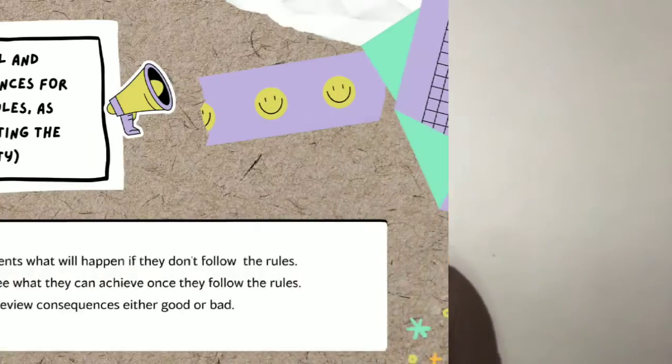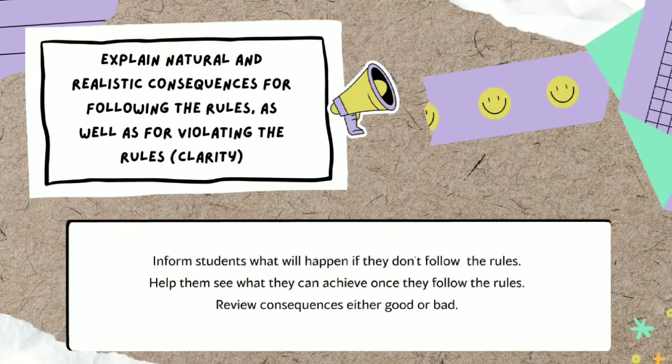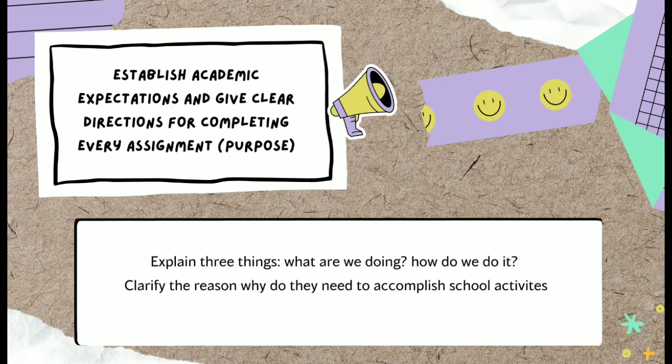Second is clarity. Teachers should explain natural and realistic consequences for following the rules as well as for violating them. Setting proper expectations and clear boundaries is a must when building a positive relationship with students. We should inform students what they can expect when they follow the rules, and what would happen if the rules are violated.